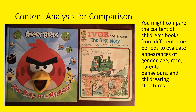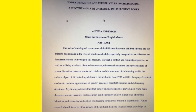You can do content analysis on just one form of media, like looking through a newspaper for themes, or you can do it for comparison. For example, you might compare children's books from different ages — there's Angry Birds and Ivor the Engine from 1980. A content analysis might compare children's books from different time periods. A researcher, Angela Anderson, did this to evaluate the appearances of gender, age, race, parental behaviours, and child-rearing structures in books from different eras. Her study was called 'Power Disparities and the Structure of Child Rearing: A Content Analysis of Bestselling Children's Books.'